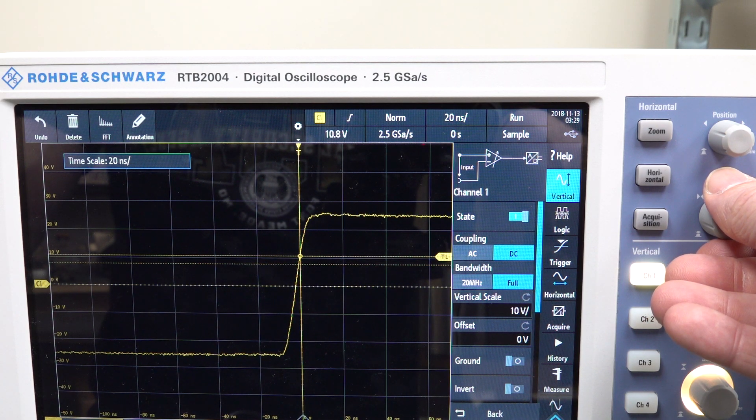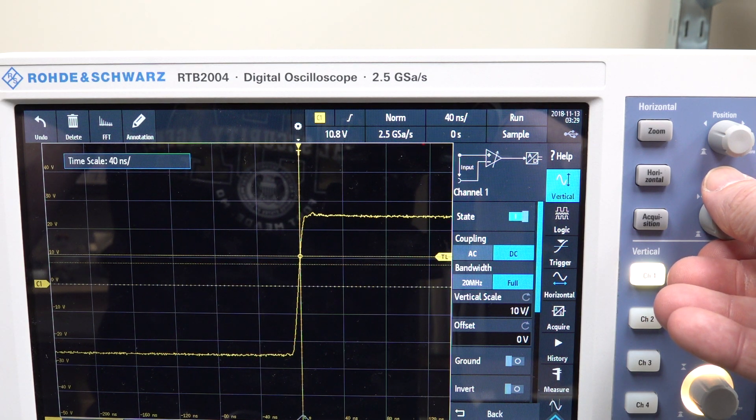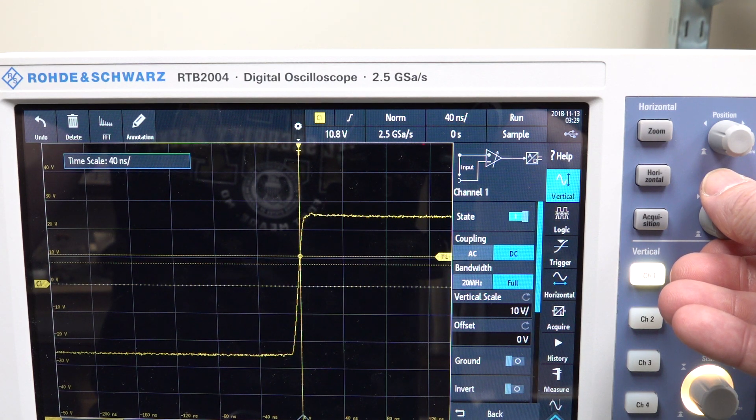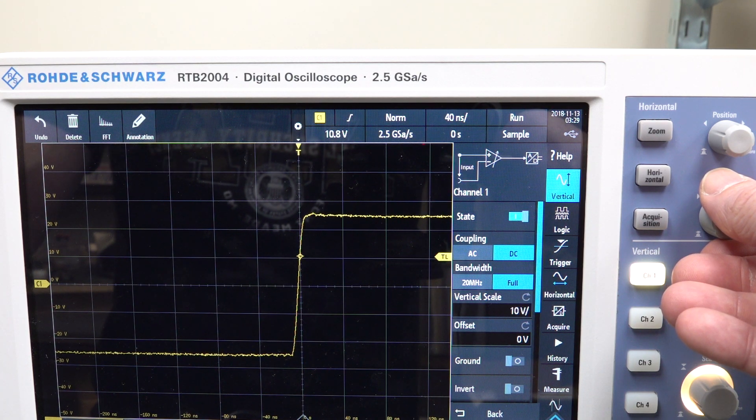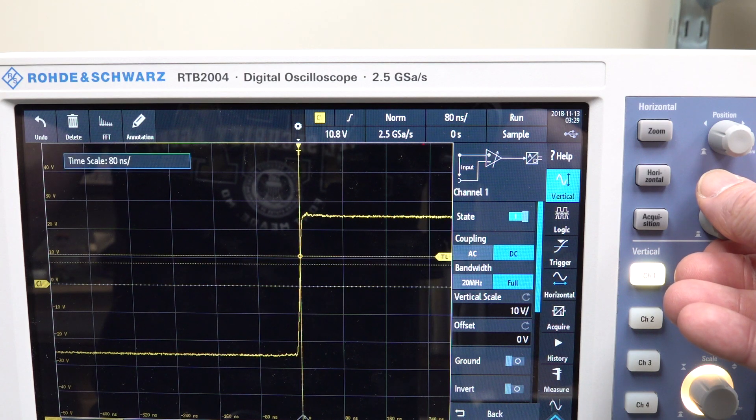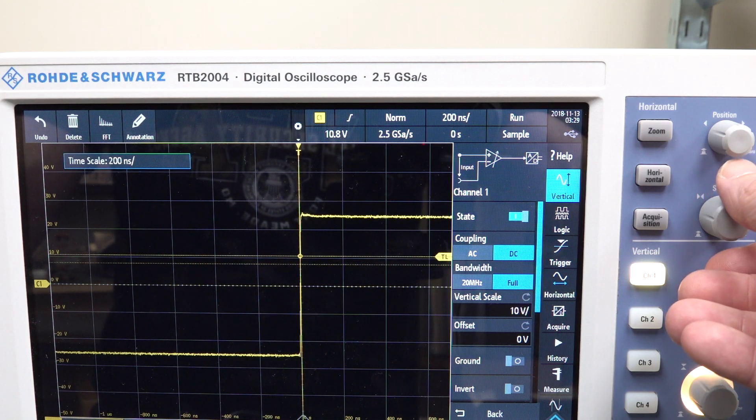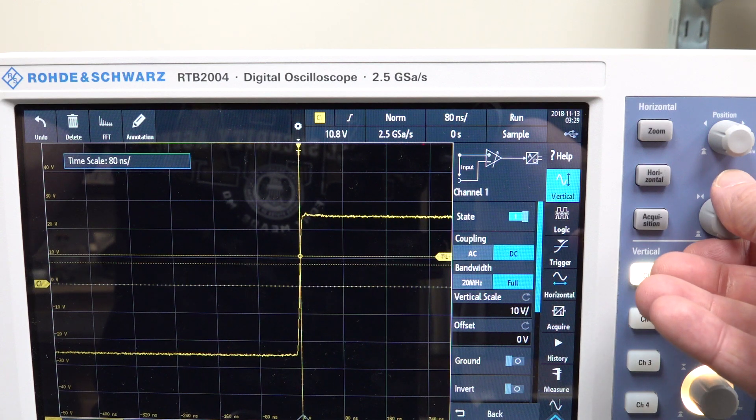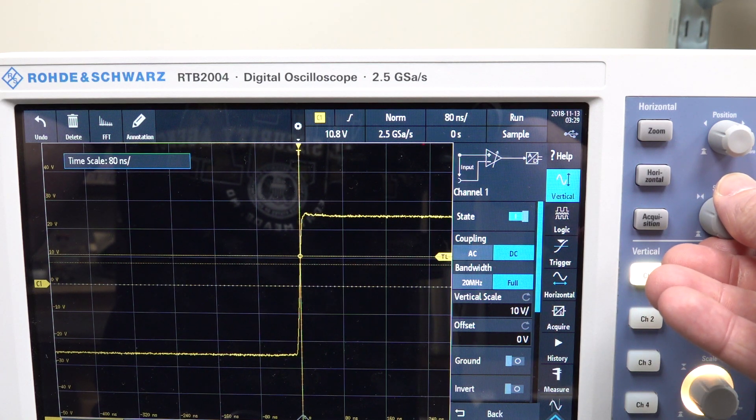20 nanoseconds, you expect 50, but you get 40. And then, well, okay, it may be 1, 2, 4, and then 100. No, you go to 80, and then 200. You can't get 100 nanoseconds.